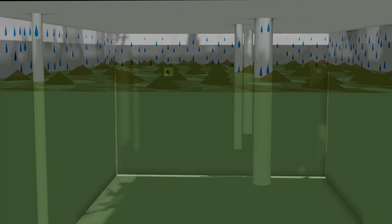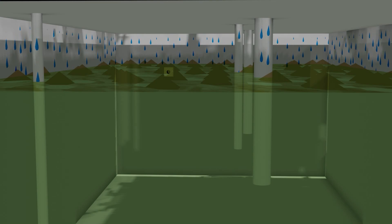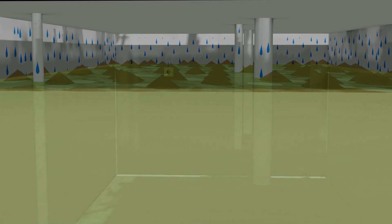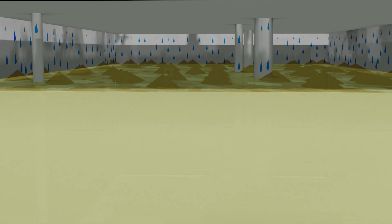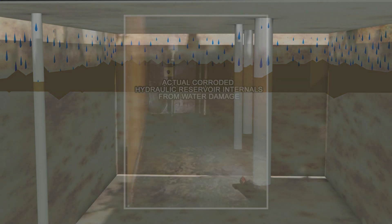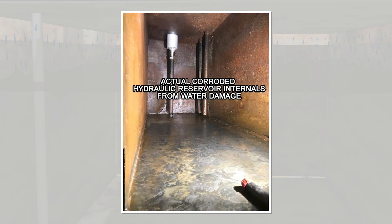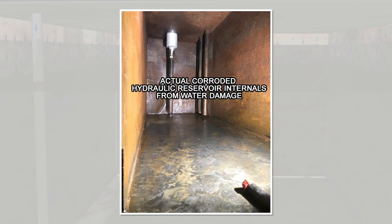Water contamination from any source in only a few hundred parts per million can turn oil milky or cloudy through oil-water emulsification. This, in turn, can cause gradual corrosion in the lubrication or hydraulic system, resulting in excessive particulate contamination of the oil.